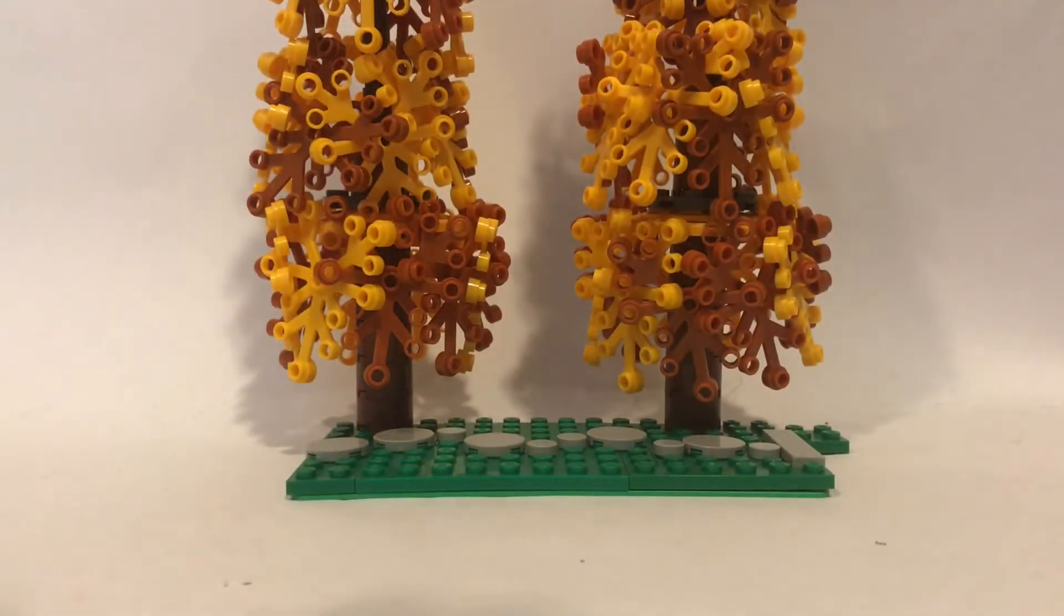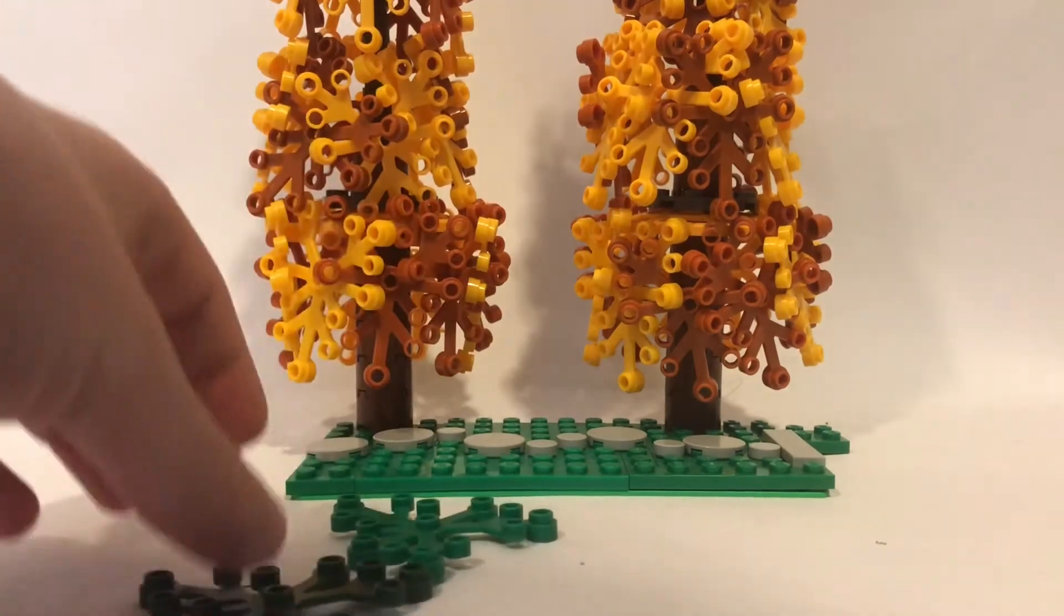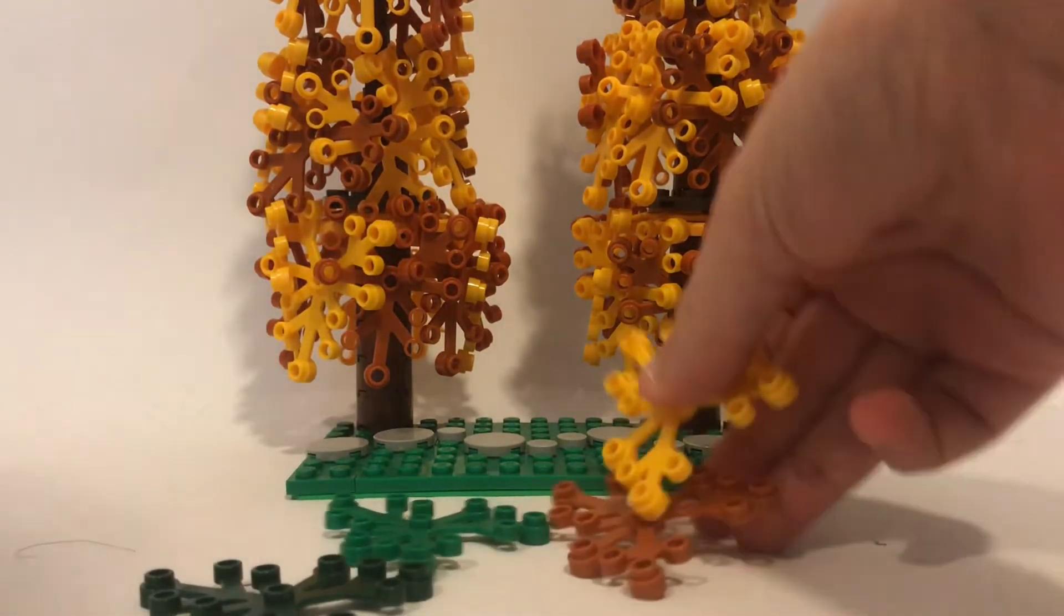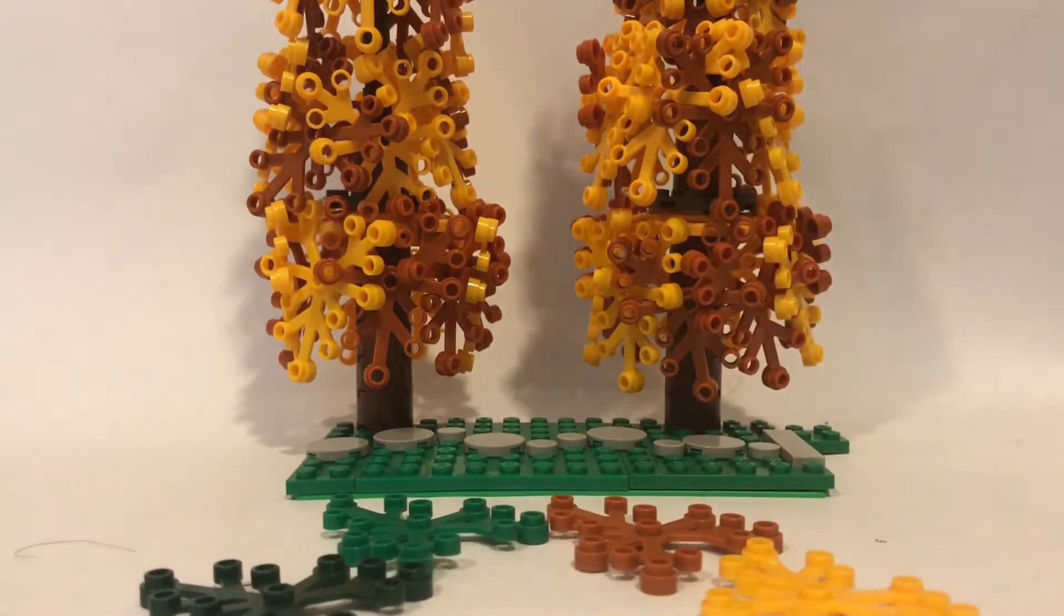You're going to want to start off with two types of leaves, one darker and one lighter. For this case I'm going to use these yellowish ones.